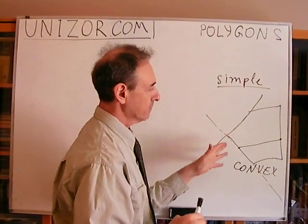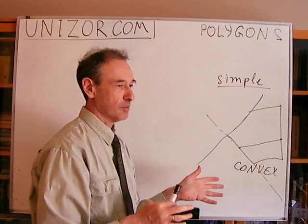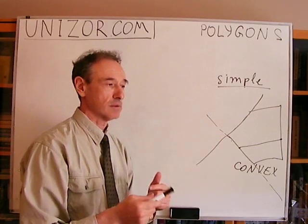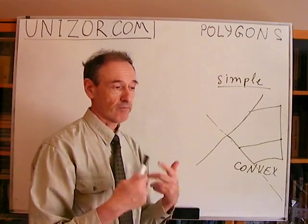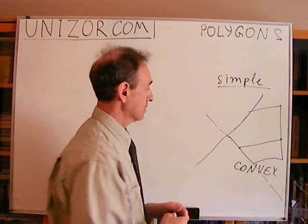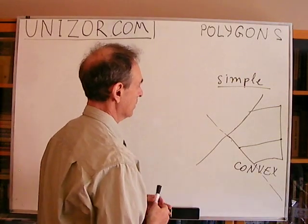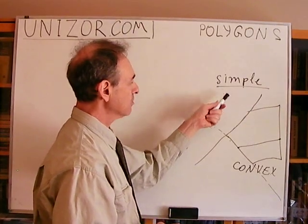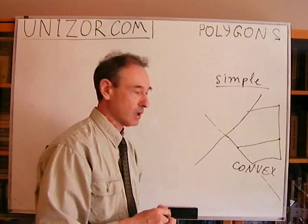These are two completely equivalent properties of convex polygons — one can be used as a definition and the other can be proved as a theorem. So we will always consider simple, and in most cases convex, polygons.